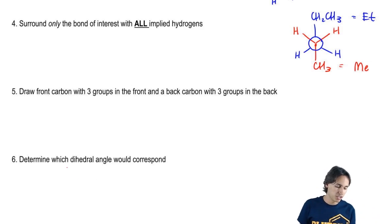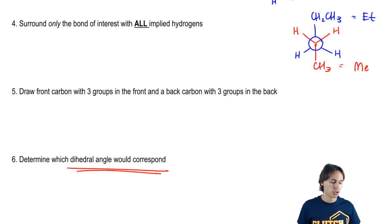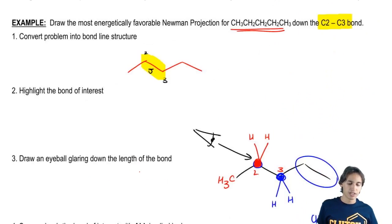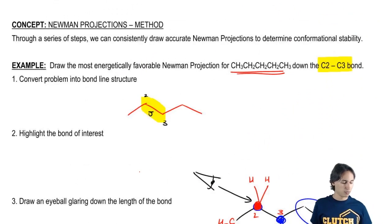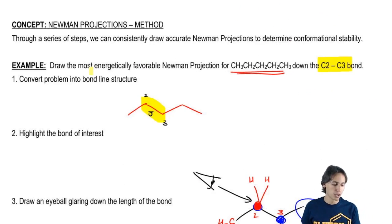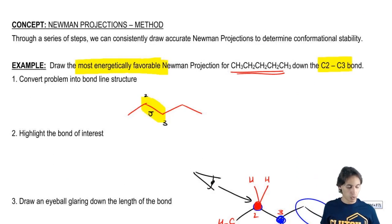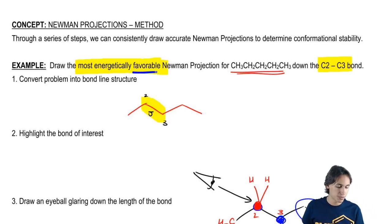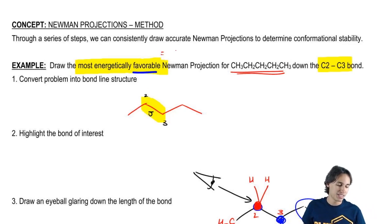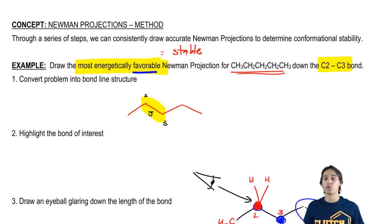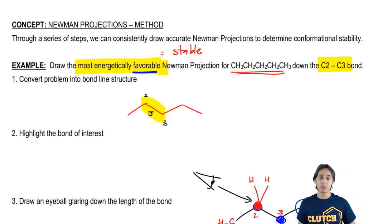So I have to determine which dihedral angle would correspond — I go back and see what he said. He specifically said draw the most energetically favorable. What does energetically favorable mean? If you see something that says favorable, that's a good thing. That means stable. So we're looking for the most stable conformation.